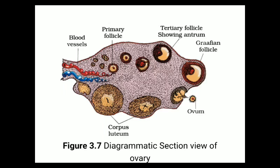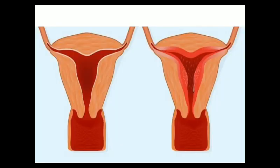During the follicular phase, inside the ovary the primary follicle forms a secondary follicle, then tertiary follicle, and finally the mature Graafian follicle. Simultaneously, the inner lining of the uterus - which is very thin after the menstrual phase - begins to thicken again. The endometrium becomes thick and spongy and gets richly supplied with blood vessels. These two events occur simultaneously.